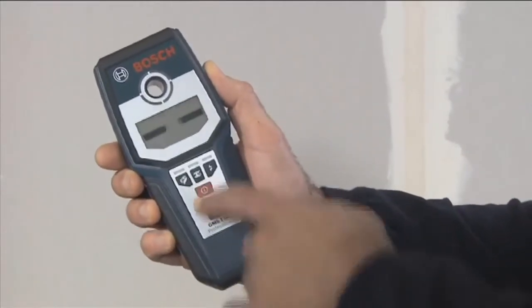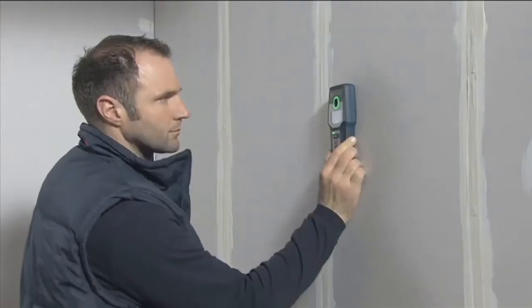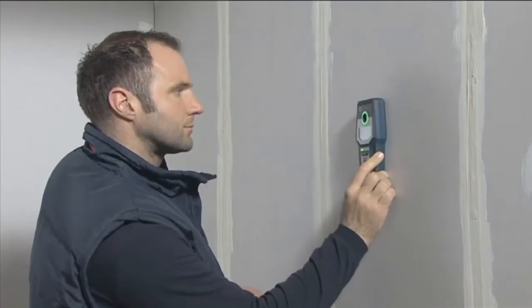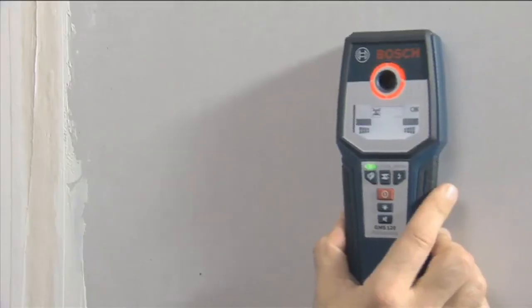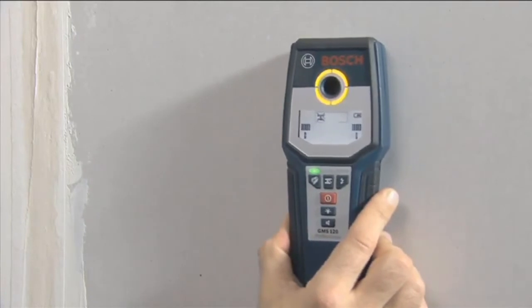You can use the GMS 120 Professional to detect wooden beams up to a depth of 3.8 cm in drywall mode. This tool indicates a positive search result by changing the color of its luminous ring and emitting an audible signal.